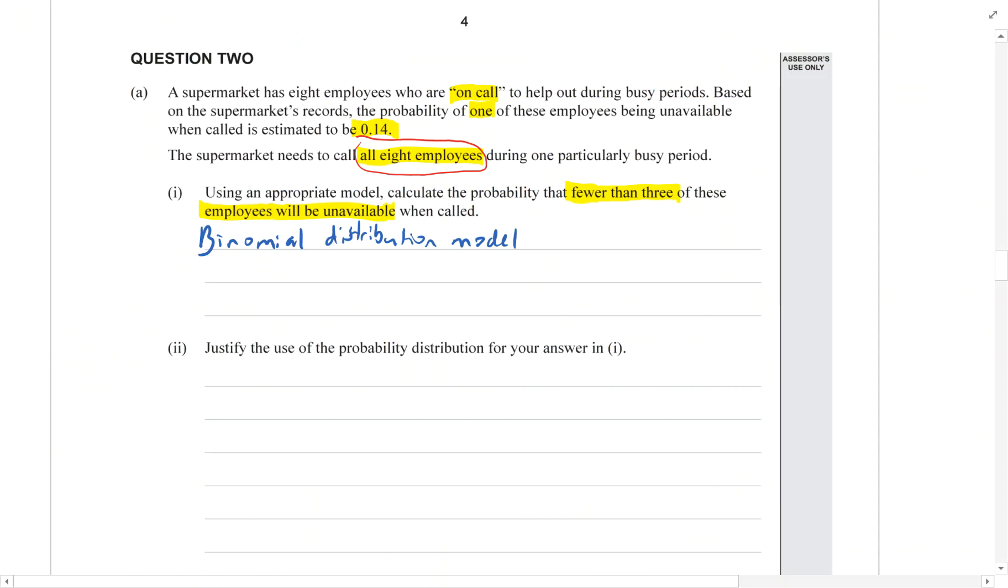How many trials are there? There's eight employees, and the probability of success in each individual trial, I'm going to call that p, that is 0.14, the probability of being unavailable for each employee.